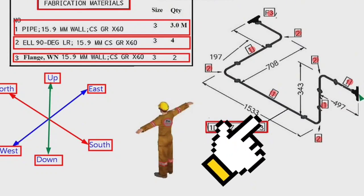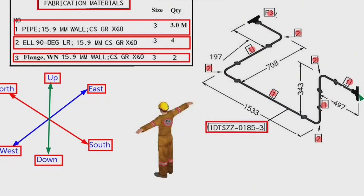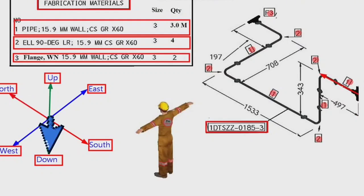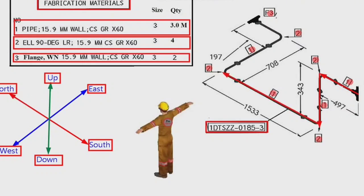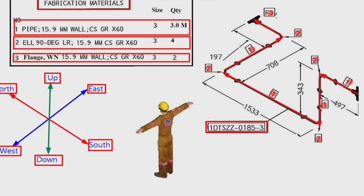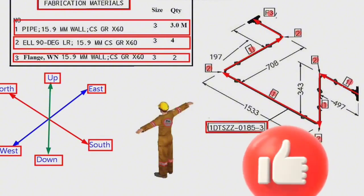Let's try to read this pipe isometric using these directions. The reading of the pipe drawing will start from this point. The pipeline travels start from this point to the north. Then the pipeline travels in the down direction. In this point the pipeline travels to the north direction. Then the pipeline turns to the east direction. In this point the pipeline travels to the north direction again. So the correct reading of the pipe drawing is completed.